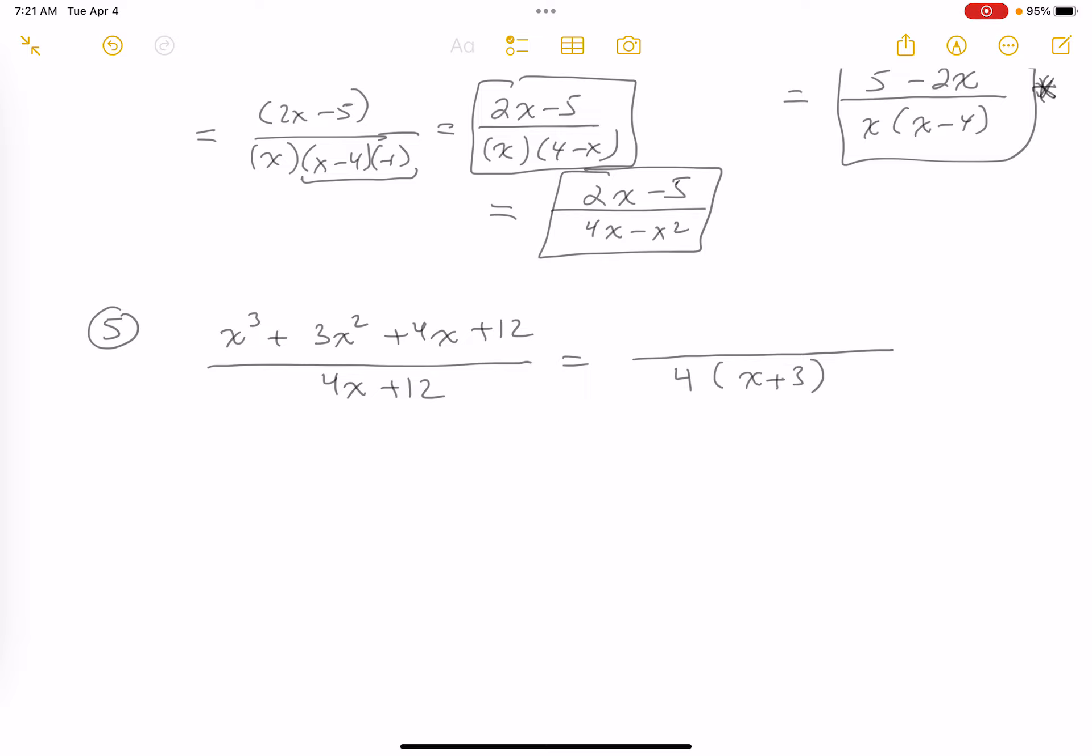Now, my suspicion is the top is going to have a factor of x plus 3 in it, but you may not see it. My suggestion over here is to use what's called factor by grouping. So if you look at the first two terms, what factors out from that is actually x squared, and we're left off with x plus 3. From the next two terms, what I notice is a factor of 4 pulls out, so I get 4 times x plus 3.